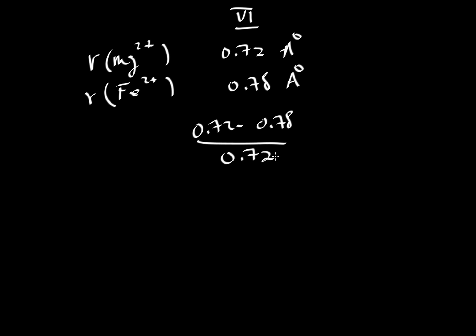Let's take a look at the radius of magnesium 2+, and if it is in six-fold coordination, it would have an atomic radius of about 0.72 angstroms. If we take iron 2+, also in six-fold coordination, it would have a radius of 0.78. Let's take magnesium as the reference. So we'll take 0.72 minus 0.78, and divide that by 0.72.